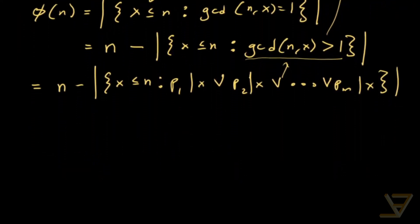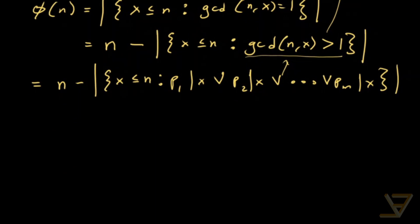So just for convenience, we're going to define a set now. We're going to say Tk for k between 1 and m is equal to x in the positive integers, such that x is less than or equal to n, and Pk divides x.